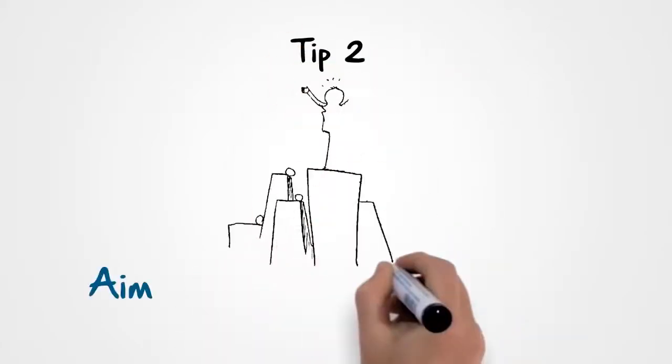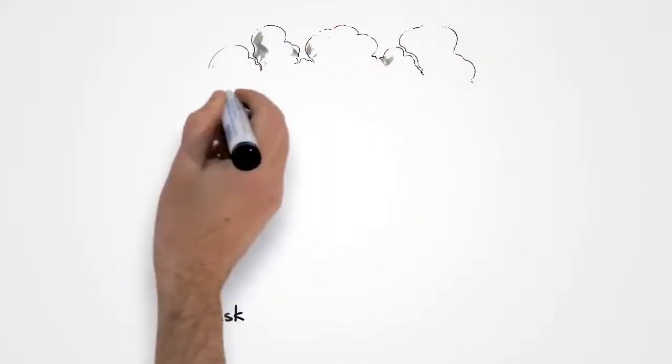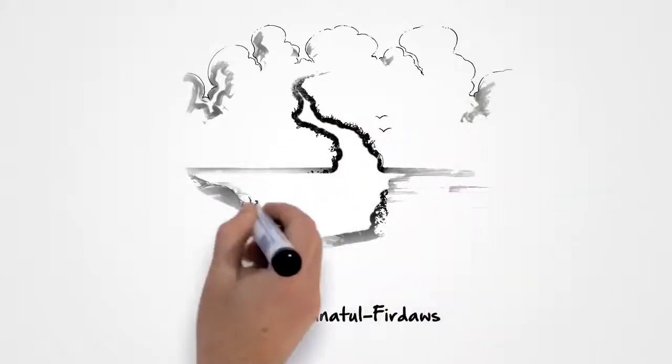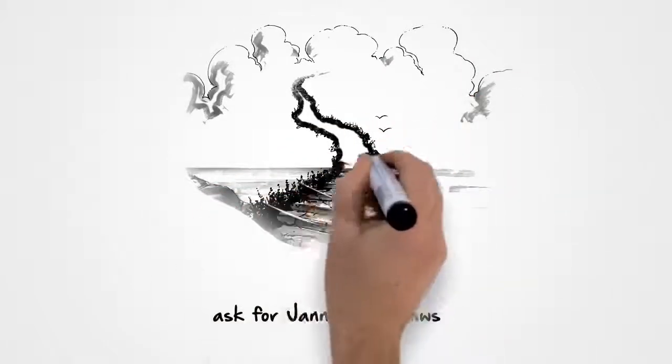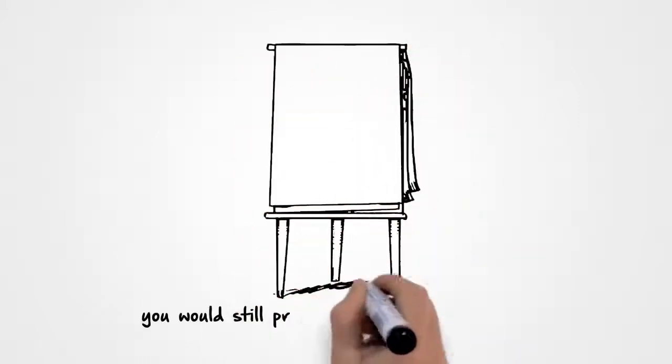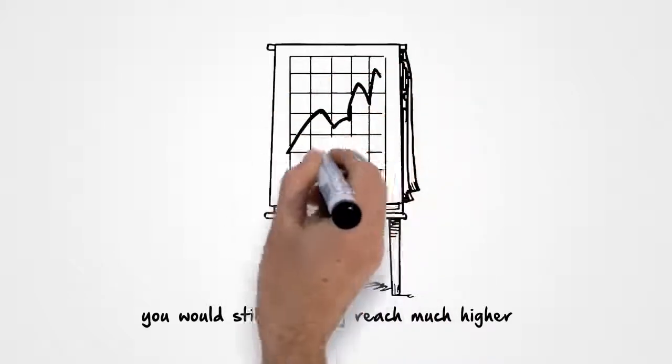Tip 2: Aim for the highest standard. The Sunnah encourages us to ask for Jannatul Firdaus, the highest part of Jannah. The higher the level you aim for, the more likely you are to achieve it. And even if you fall short of that target, you'll still probably reach much higher than you would have done if you'd set a lower target to begin with.